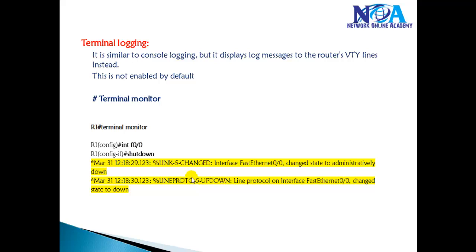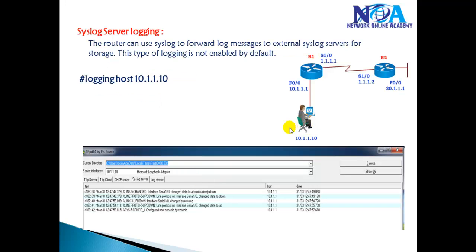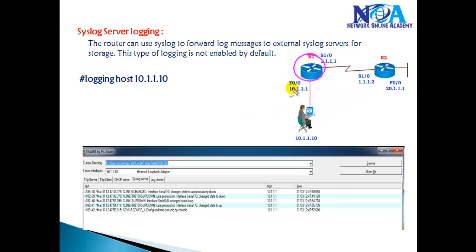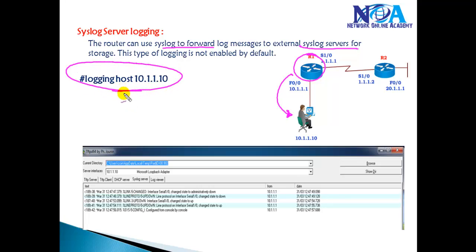For permanent logging, we can send log messages to an external server — this is called a syslog server. Whatever changes happen on the router are stored permanently on a computer running a syslog server application. To enable this, use the command 'logging host' followed by the IP address of the syslog server. The same can be configured on Router 2 and on all switches so any administrator changes are captured.